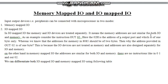This address is of one byte only, whereas we know that the addresses for memory in 8085 should be of two bytes. Then why is the address provided in OUT 02 of one byte? This is because the I/O devices are not treated as memory, and addresses are also designed separately for I/O and memory.